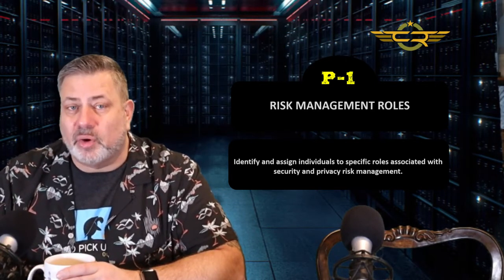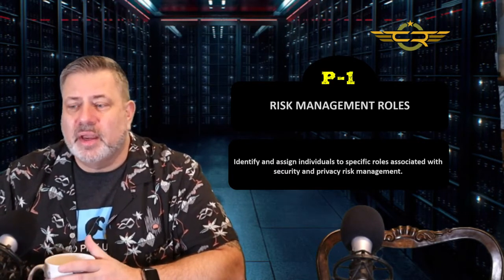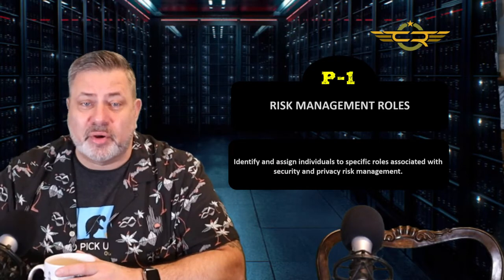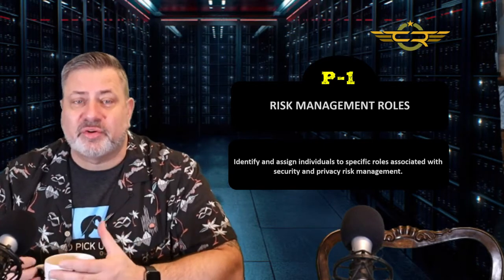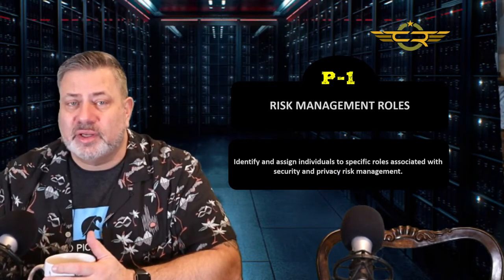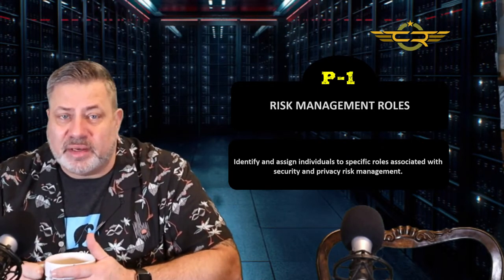The old rule applies here: if you don't assign someone responsibilities to do something, then it won't get done. We're going to take each and every task in the RMF and assign primary responsibilities and supporting roles. Before we even start, we need to know who in the organization is responsible for security and privacy — who has those primary tasks or secondary assignments. We have to get this all down in writing.